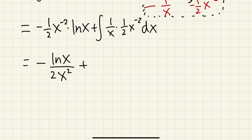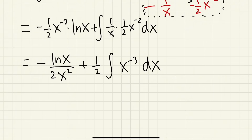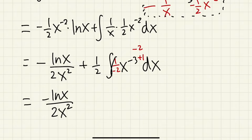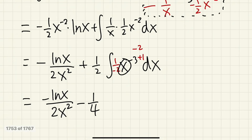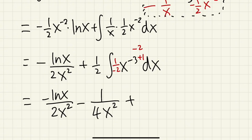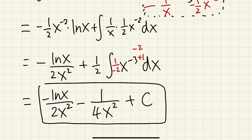Plus — putting the 1/2 outside the integral, we have x to the negative 1 times x to the negative 2, which is x to the negative 3. Adding 1 to the power and dividing by the new power, we finally get negative ln(x) over 2x squared, minus 1 over 4x squared. That's the first one.